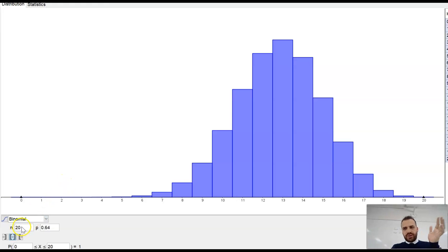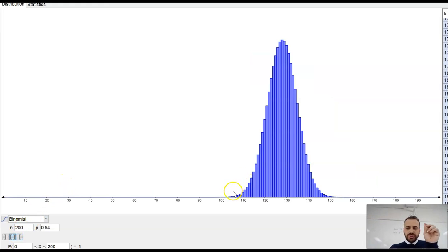Let's get really crazy and go up to 200. And at 200, you can see, one, it looks fairly symmetrical, maybe not quite, but really close. But two, it also looks a lot like a bell curve. It looks a lot like a normal distribution.